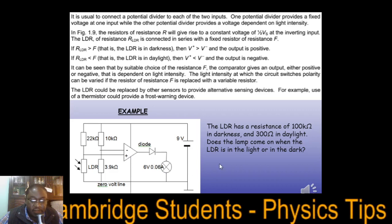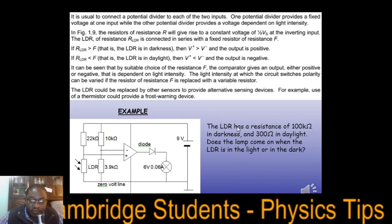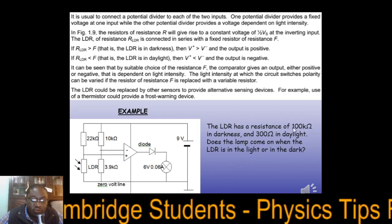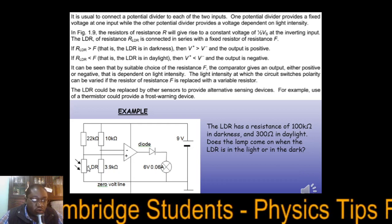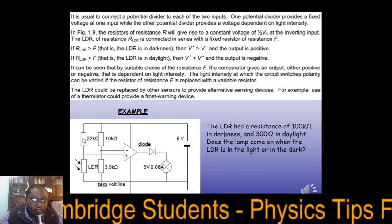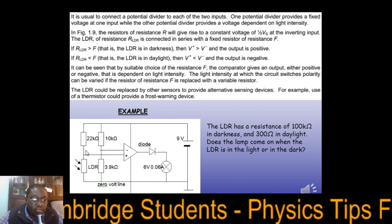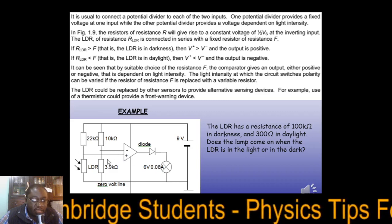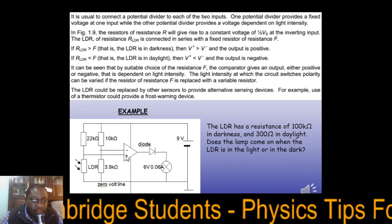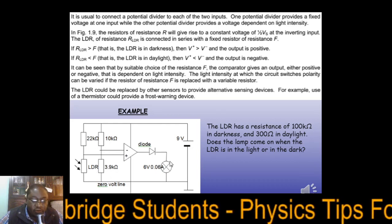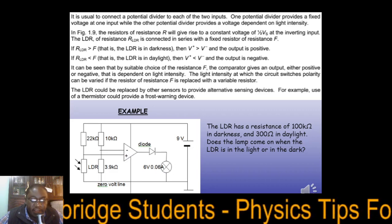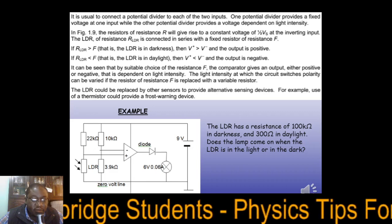If the resistance of the LDR is 100,000 ohms, which is 100 kΩ, then you calculate: 100 kΩ over 122 kΩ total, times 9 V for the non-inverting side, and 3.9 kΩ over the total, times 9 V for the inverting side. You then compare the two values. Please work it out and let me know in the comments what value you get — let's be proactive and get these questions done.